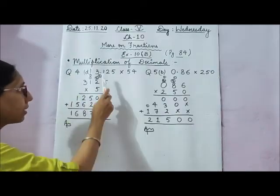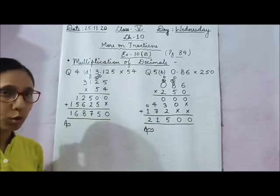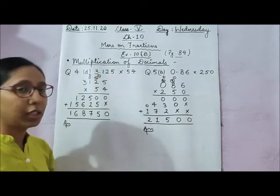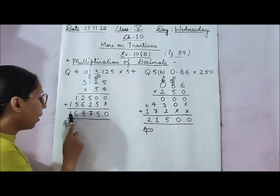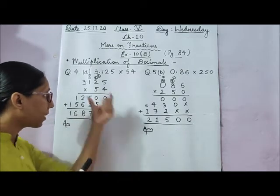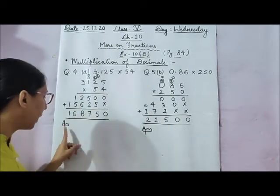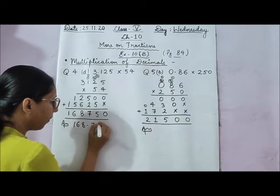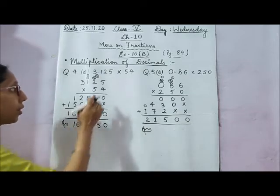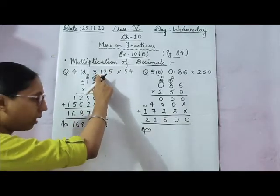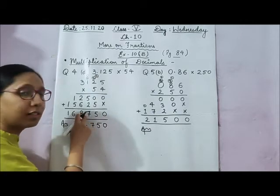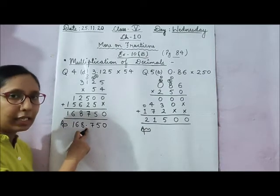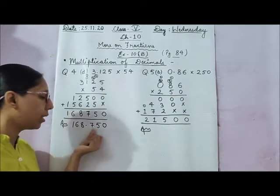Question number 4, part d is 3.125 multiplied by 54. We take it as a whole number and multiply normally after removing the decimal point. The product we get is 168750. But the answer will be 168.750. Why? Because in 3.125 there are 3 digits after the decimal point. That's why we place the decimal point 3 digits from the right — before 7, 5, and 0. So the answer is 168.750.